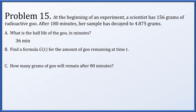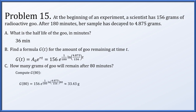In part b, find a formula g(t) for the amount of goo remaining at time t — which we've essentially derived already: it follows the exponential model with initial amount 156 grams and r solved in part a. In part c, how much goo remains after 80 minutes? Setting t equal to 80 and plugging in gives about 33.43 grams. The real work in this problem was solving for r.